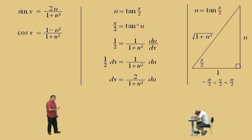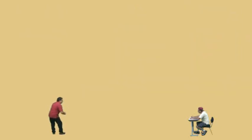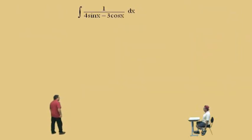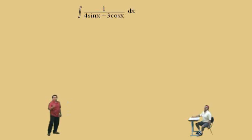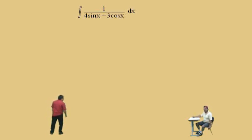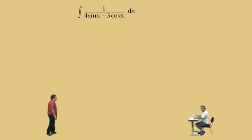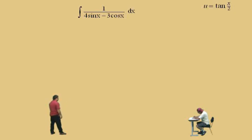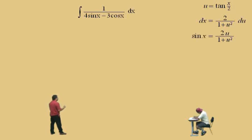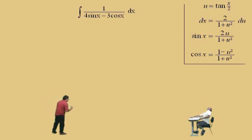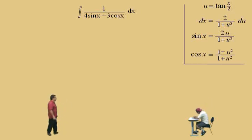Now we know how to replace sin x, cos x, and dx. This was just a warm-up — it's a long problem. Let's get back to work. We have the integral of 1 over (4 sin x − 3 cos x) dx. Based on the substitution u = tan(x/2): dx = 2/(1+u²) du, sin x = 2u/(1+u²), and cos x = (1−u²)/(1+u²).